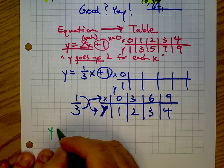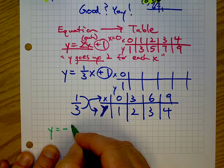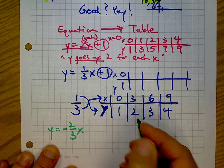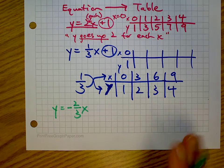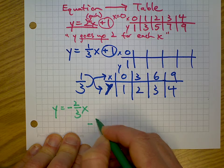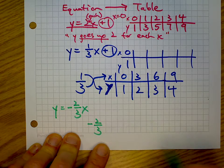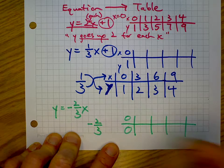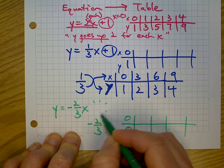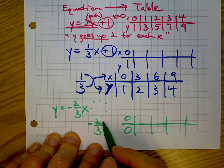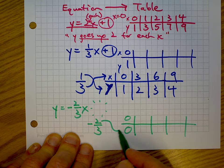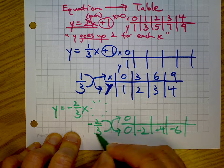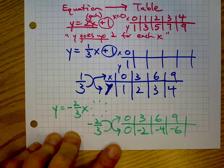Let's do a different one: y equals negative two-thirds x. First, we separate out our fraction for demonstration. We make our little table. What's the initial value, the y-intercept? Zero — because there's nothing added, so it's zero. Now we do the shuffle method: the numerator is negative two, the denominator is positive three.